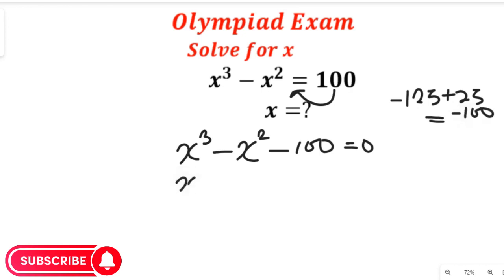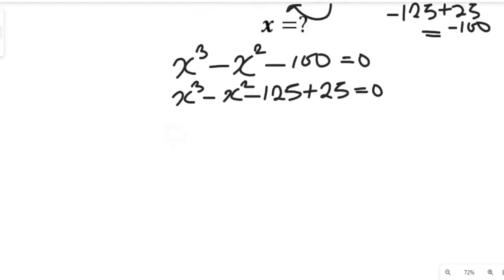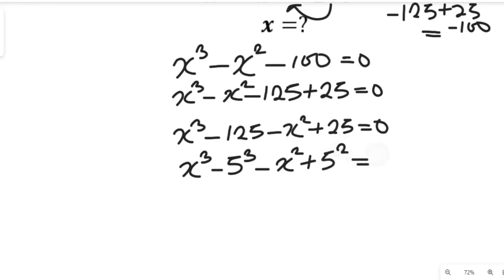So we'll have x to the power of 3 minus x to the power of 2 minus 125 plus 25, and this will be equal to zero. We'll separate them: x to the power of 3 minus 125, minus x squared plus 25, equal to zero. Remember, 125 is 5 to the power of 3, so we'll have x to the power of 3 minus 5 to the power of 3, minus x to the power of 2 plus 5 to the power of 2, and this will be equal to zero.